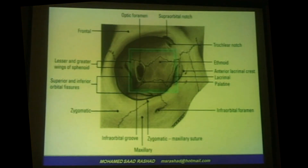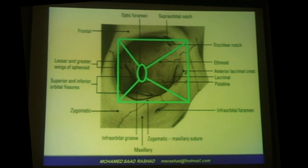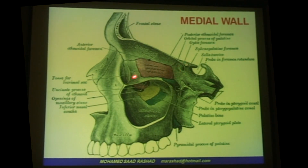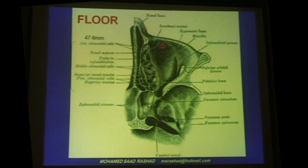The orbit is shaped like a pyramid. The apex is at the optic canal, which is inside the sphenoid bone, and there are four walls: medial, superior, lateral, and inferior. The most important feature of the medial wall is the lamina papyracea, which is a very thin bone. It is damaged during sinus surgery, and its posterior end is related to the optic canal. When performing orbital decompression, we have to remove all of this medial wall.